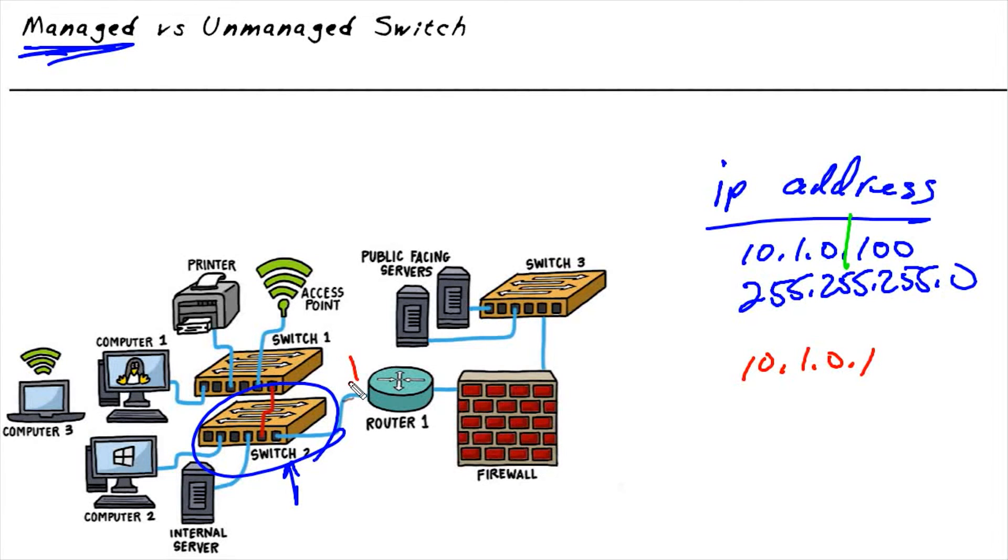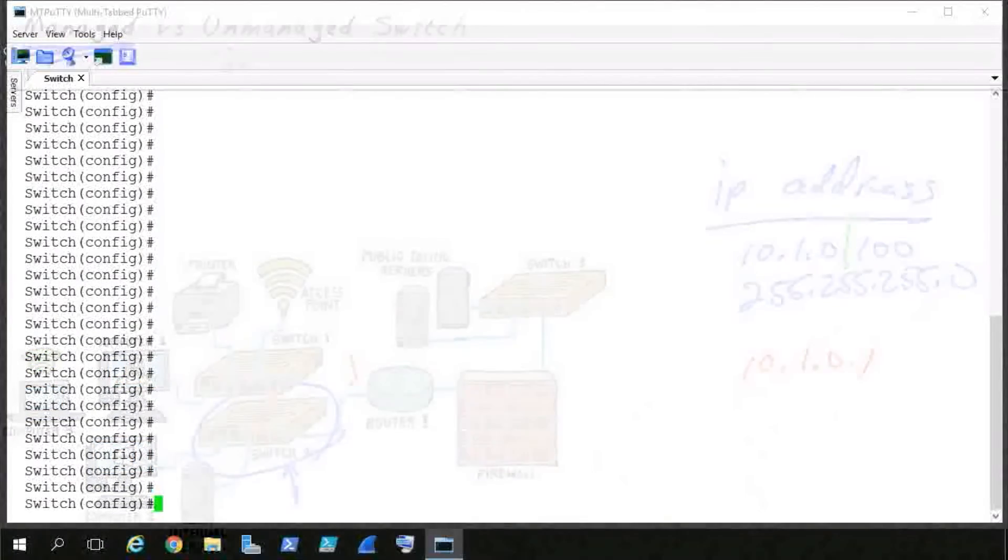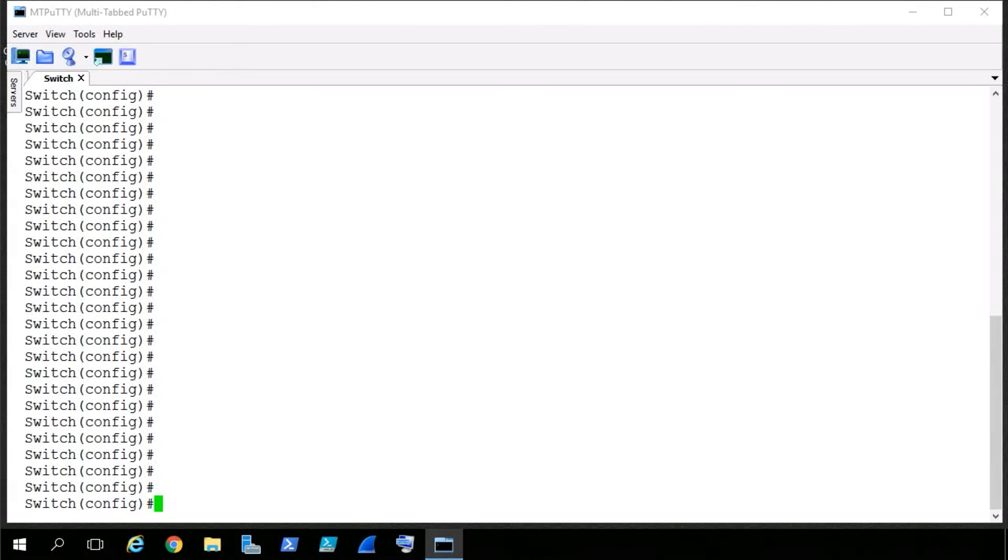That way the switch, if it ever needs to respond back to an administrator who's not on the local subnet, it can use its default gateway to do it. So to configure an enterprise or a corporate switch for management, it's going to depend a little bit based on the vendor, whether it's HP or Juniper or Cisco. In this demonstration, it's a Cisco switch.